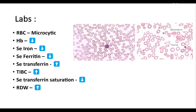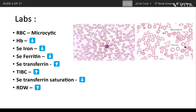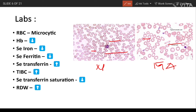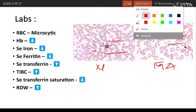Serum transferrin saturation decreases as there is no available iron, and red blood cell distribution width (RDW) also increases. The histological slide shows microcytic anemia: compared to the normal RBC slide where cells are equally distributed and equal in size, the iron deficiency anemia slide shows various distributions in sizes of the RBCs.